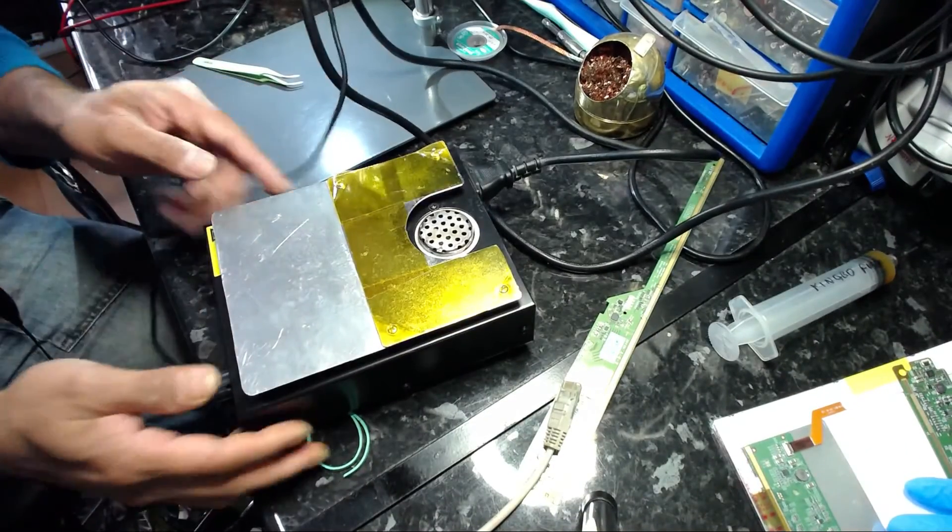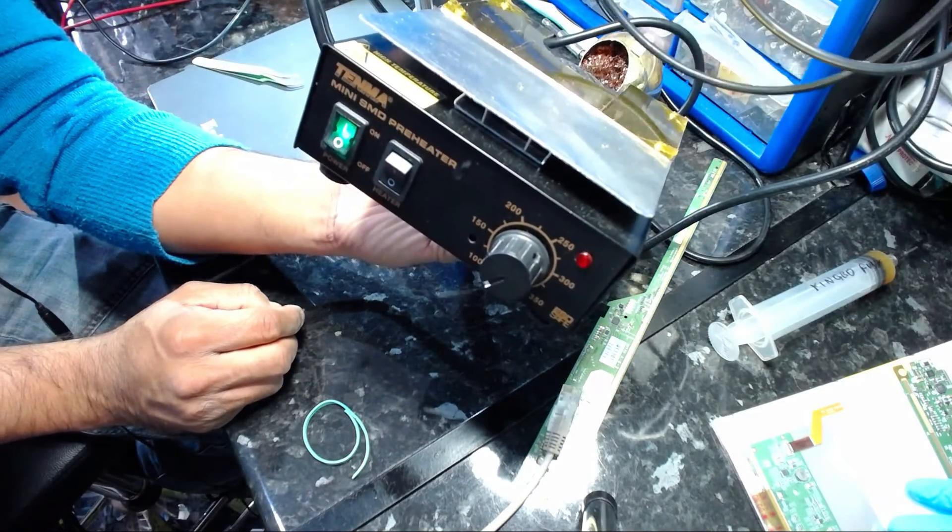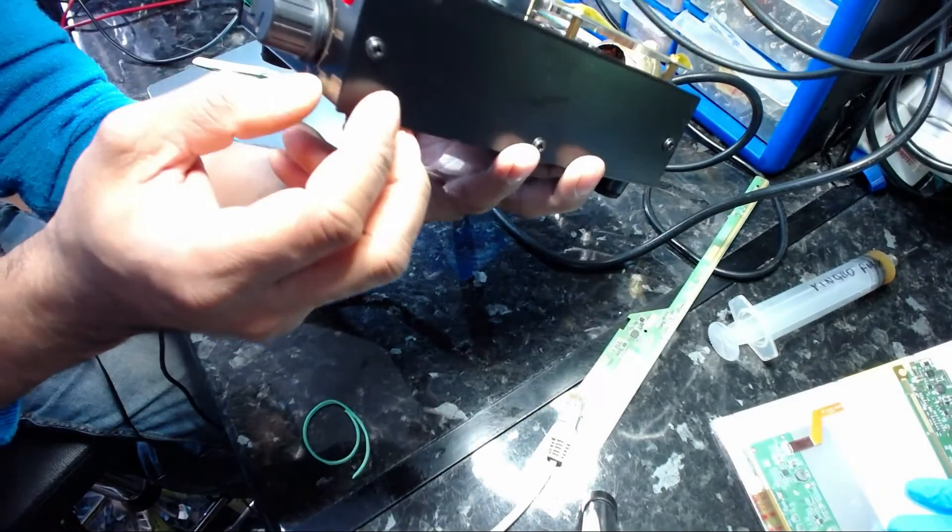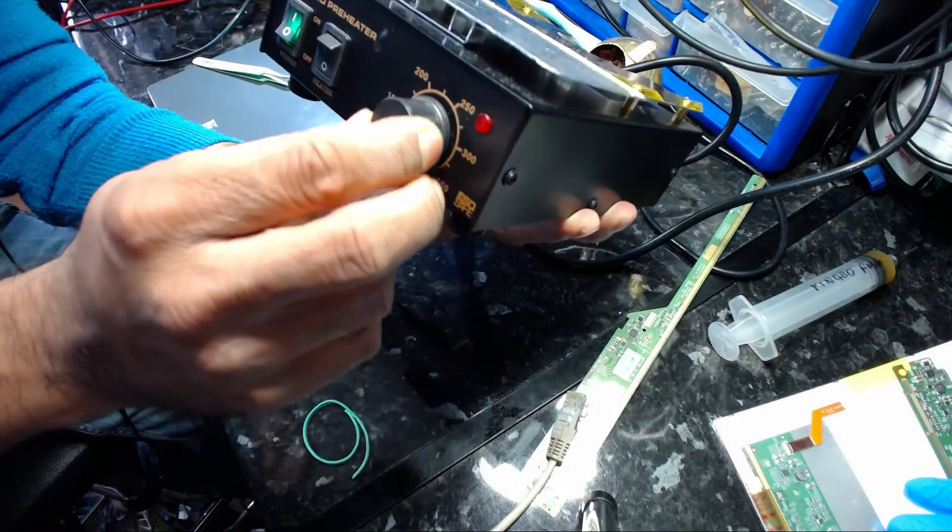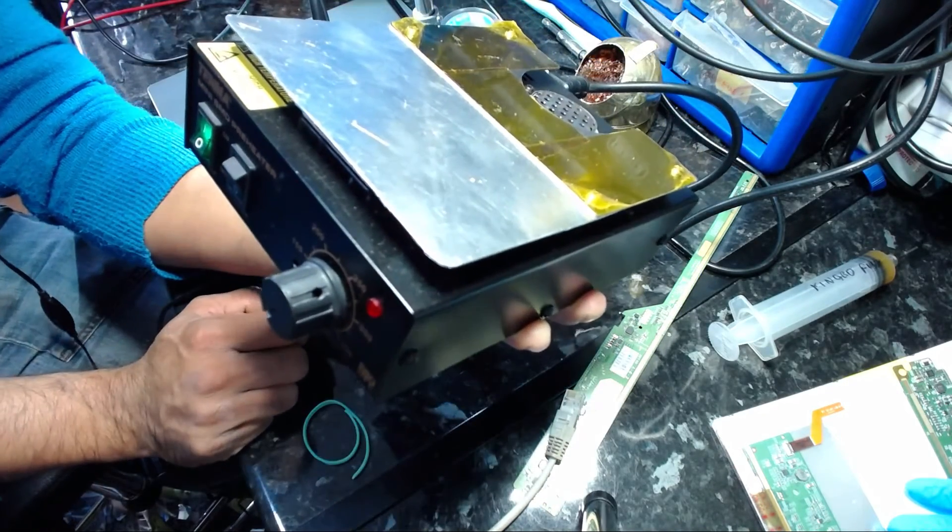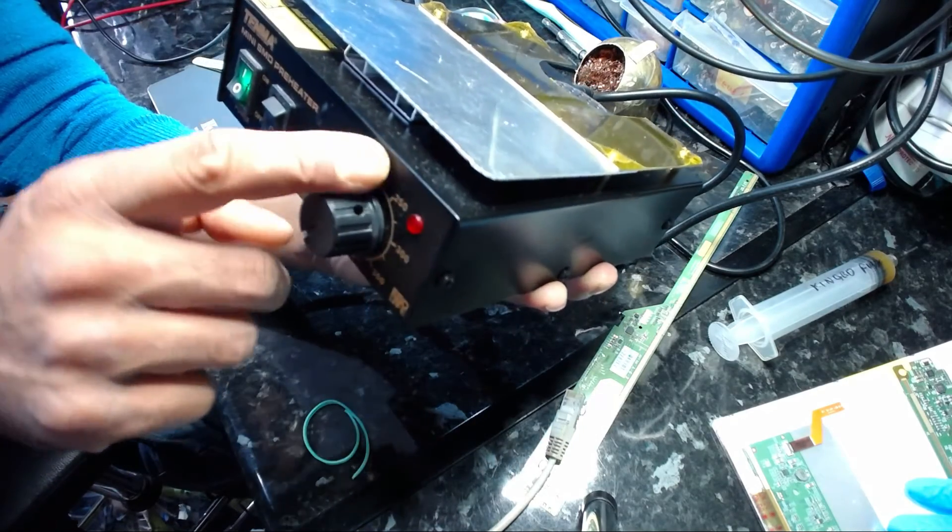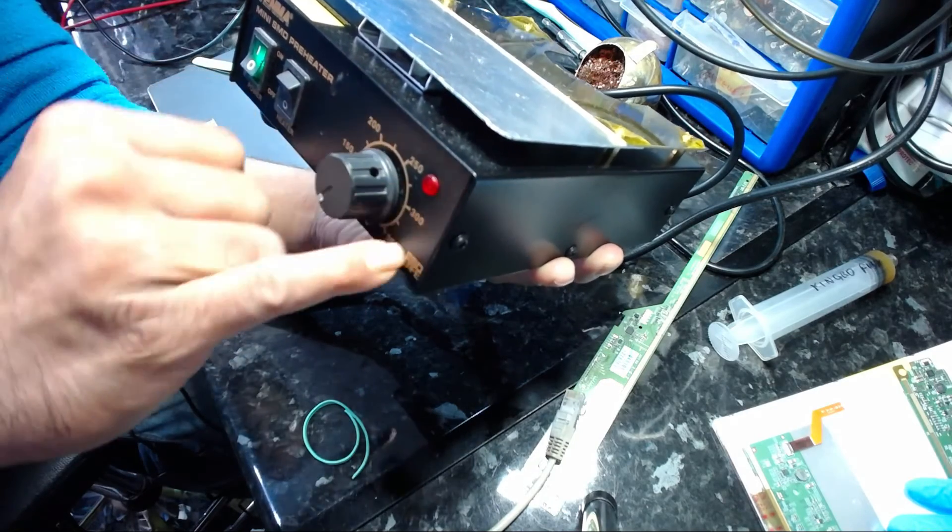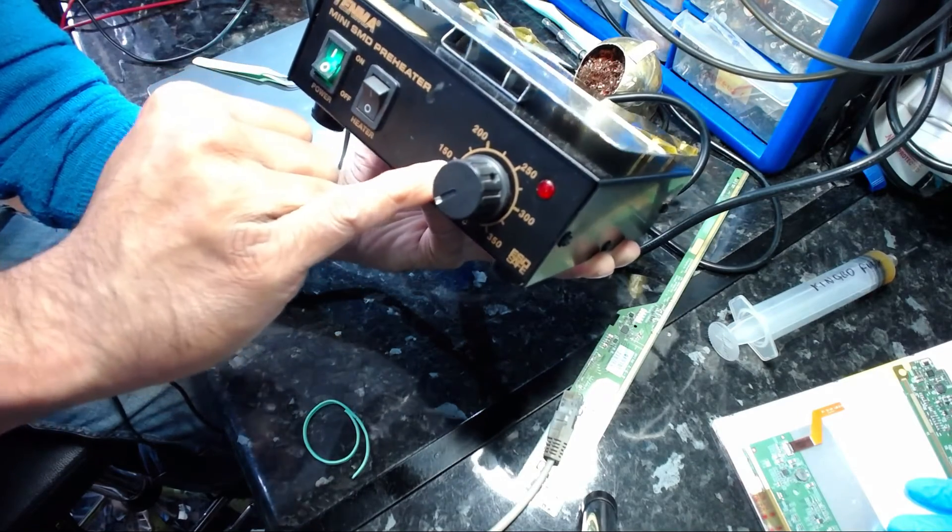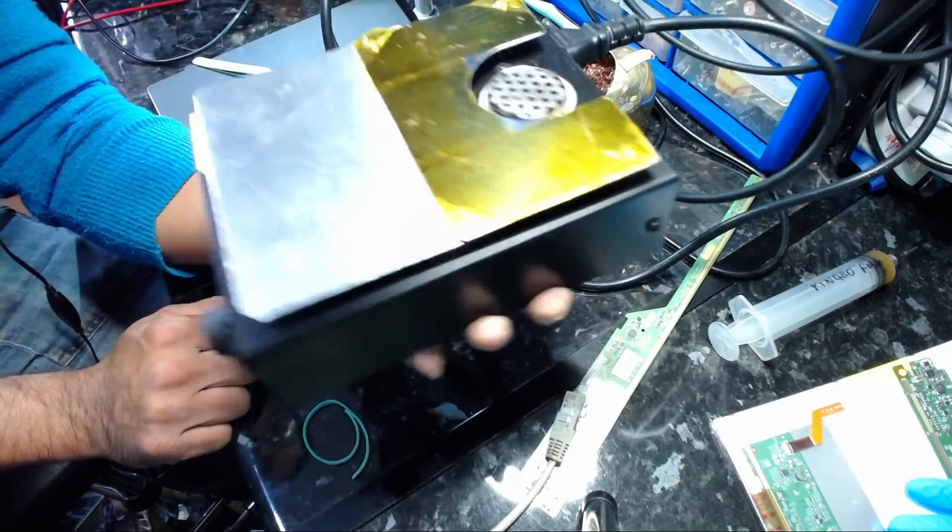What is this? There you go. Tenma Mini SMD preheater. It goes up to about 350 degrees Celsius. The beauty of this is it's all marked. Surprisingly, even some of the most expensive hot air stations basically don't have this. All it has is numbers, but it doesn't specify what degree Celsius you're running. This is at 100, 150, 200, 250, 300, 350. Absolutely amazing.